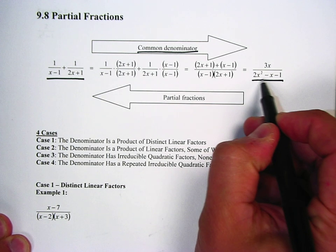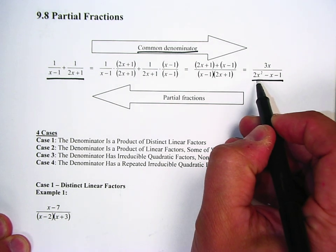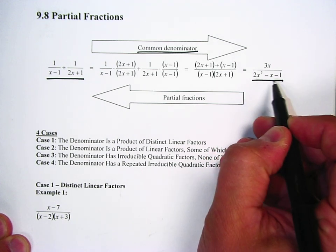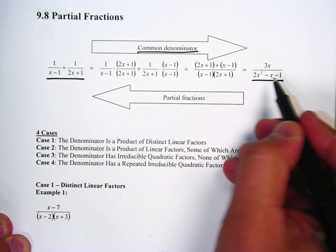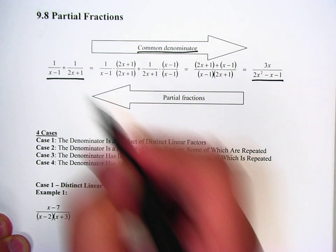With partial fractions, we're going to be breaking this down, especially working with the denominator of 2x squared minus x minus 1. So we're going to break it into parts and then figure out what goes on top.